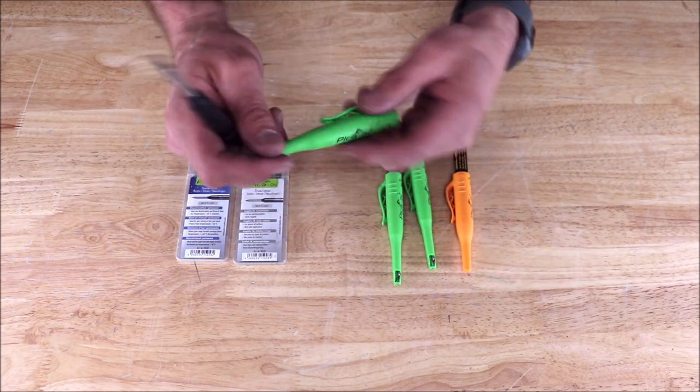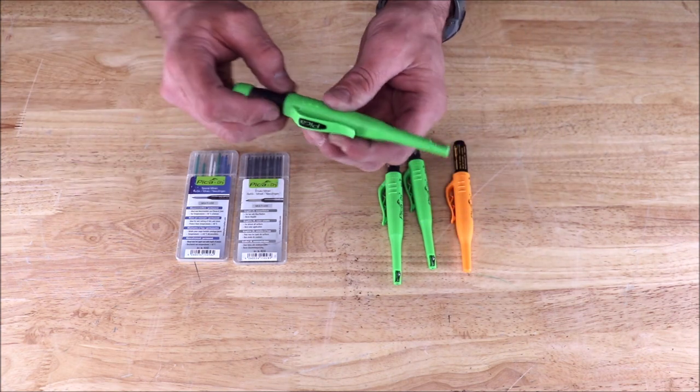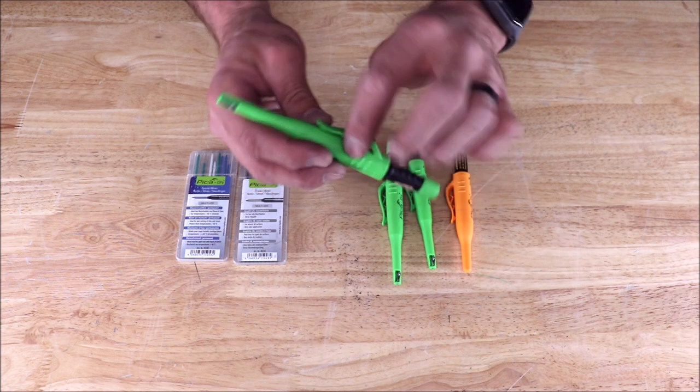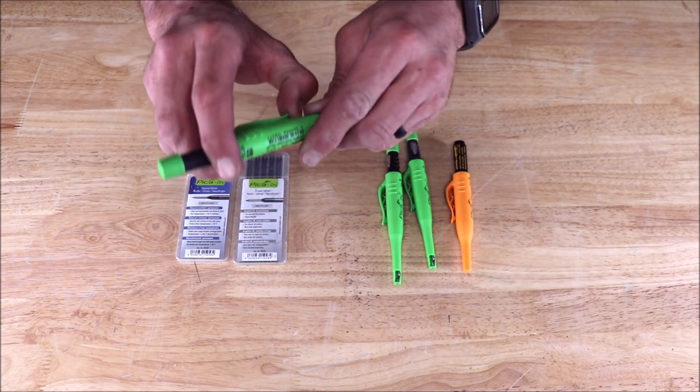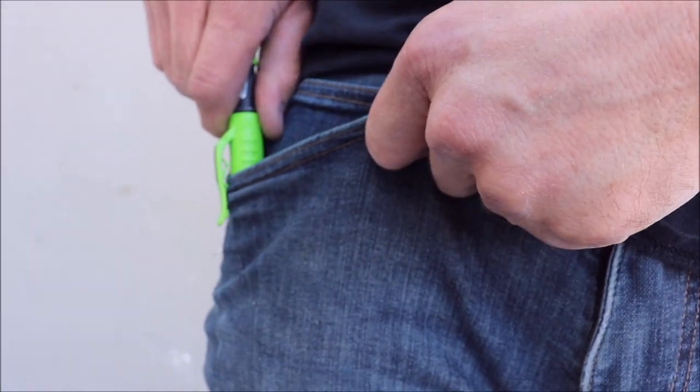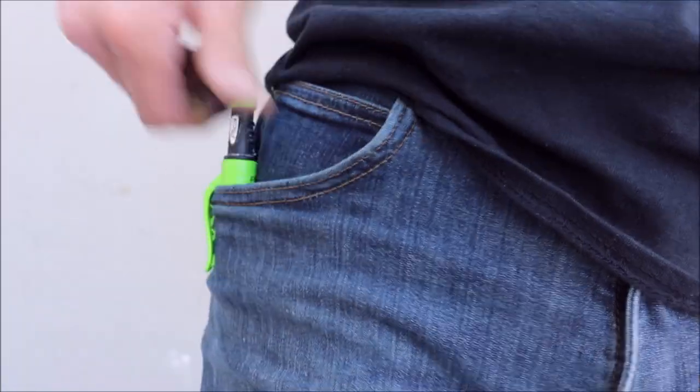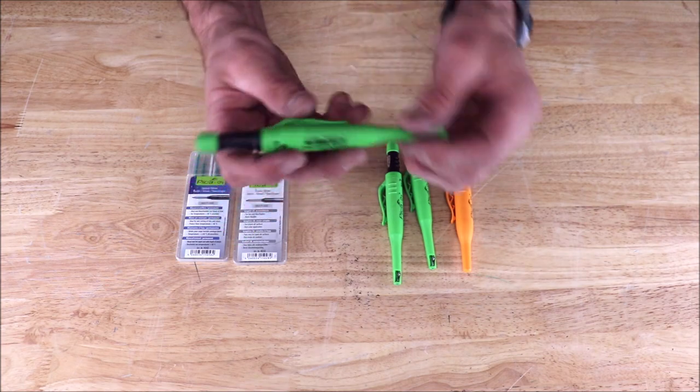You have your holster here with an integrated sharpener. This holster has a pocket clip with two settings, medium and high. It fits really nice in your workwear, your work pants, or jeans.